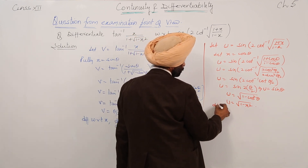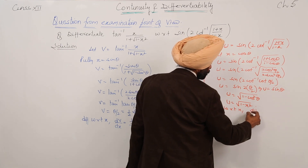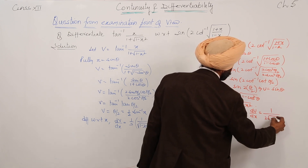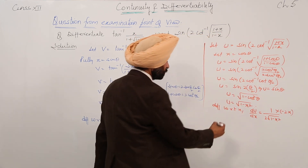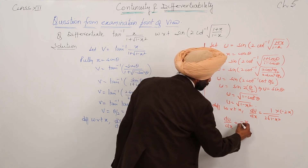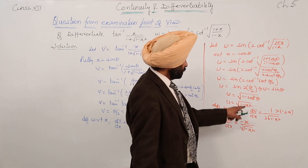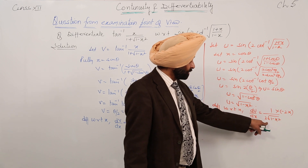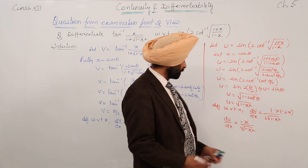Now differentiating with respect to x: du/dx equals 1 upon (2 under root of 1 minus x squared) times minus 2x. So du/dx equals minus x upon under the root of (1 minus x squared). The power comes down, subtracting 1 from the power, and then the derivative of (1 minus x squared) is minus 2x.